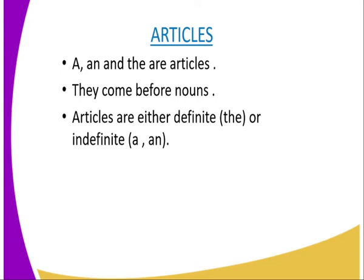We have article 'a', article 'an', and article 'the'. A, an, and the — these are the three types of articles that we have in English.